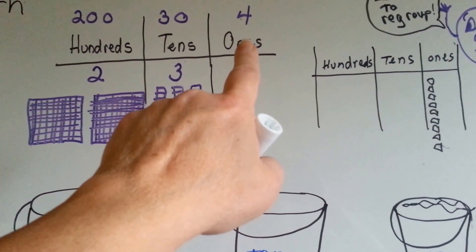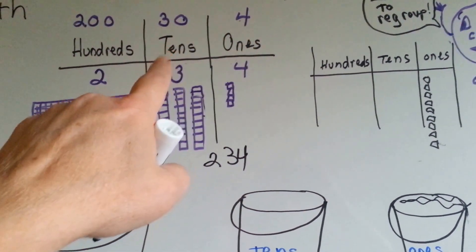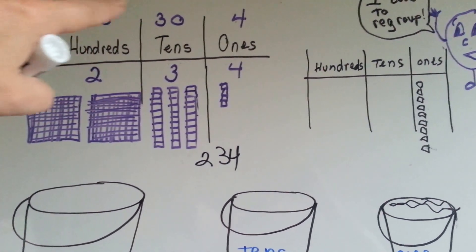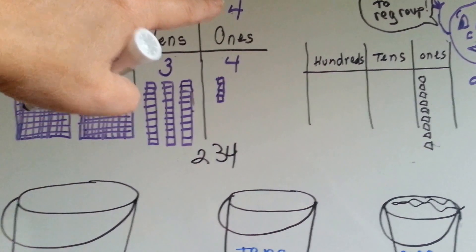That means you have 4 ones, 3 tens, and 2 hundreds. 200, 30, and a 4.